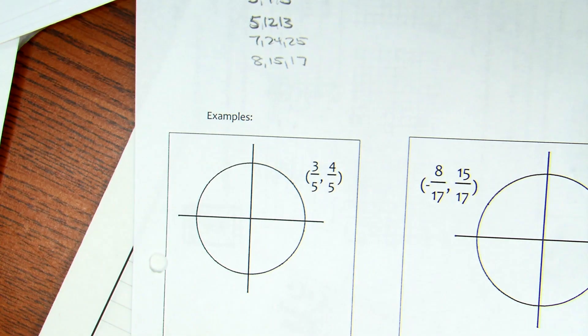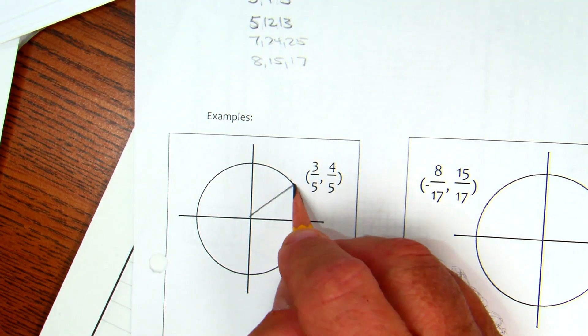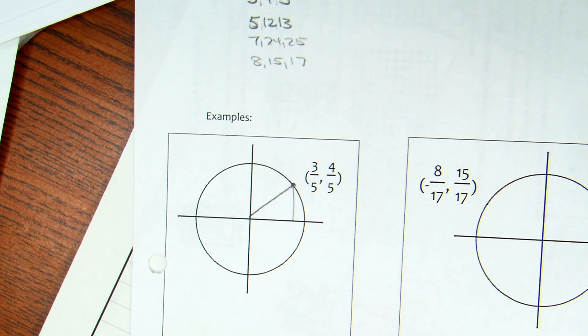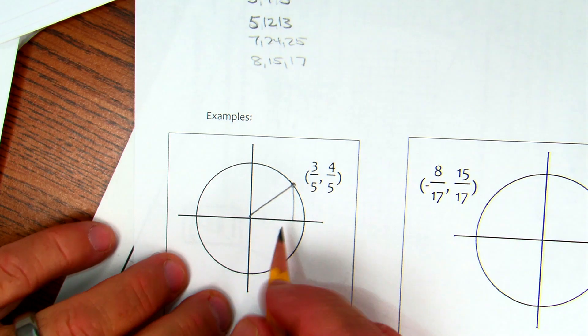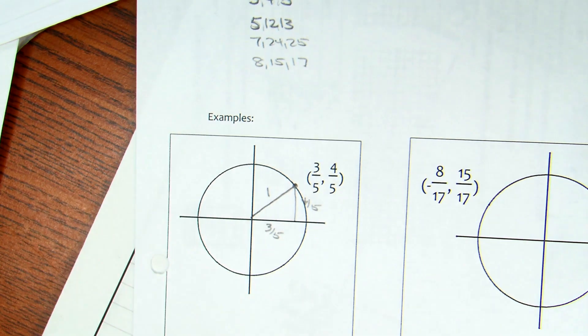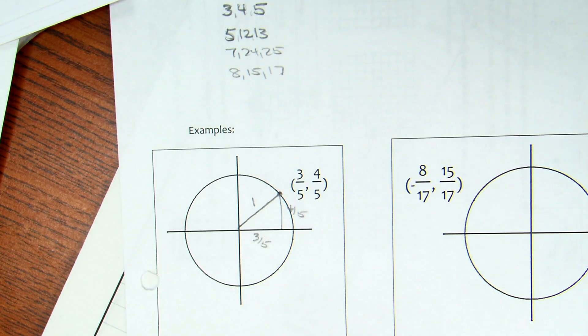So, here's the idea behind it. Technically, we're back on the unit circle. Our radius would be one. This would be the three-fifths. This would be the four-fifths. That would be the one. So, for example, if I asked you to get the sine, the sine is still the y-coordinate, which is four over five. Cosine is the x-coordinate, which is three over five. Everybody good with that? And then their inverses would be the reciprocal of that.